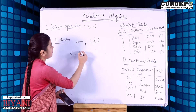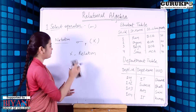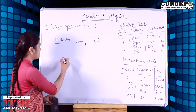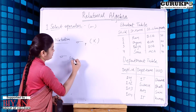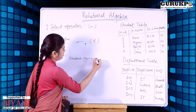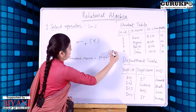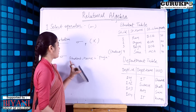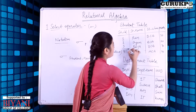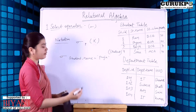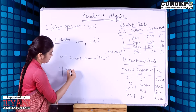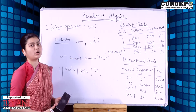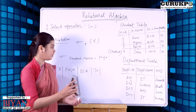Here X is the relation on which we apply a certain condition. We take two tables: the first is the student table and the second is the department table. For example, we put the condition that the student name is 'Puja'. The select operator selects the whole tuple from the student table where the name is Puja, and it gives us all the columns present in the student table.